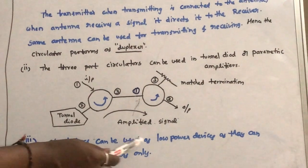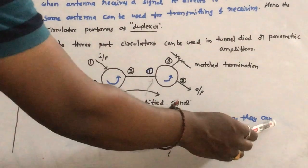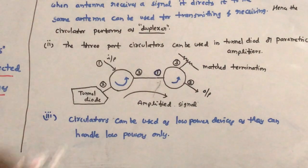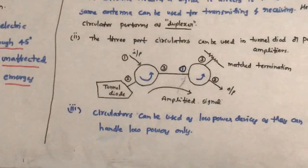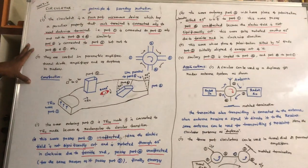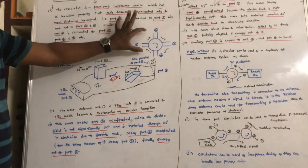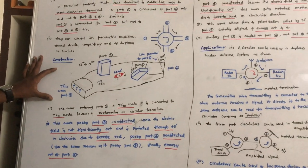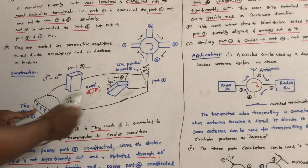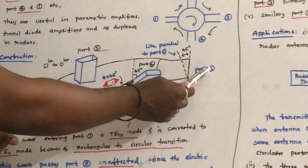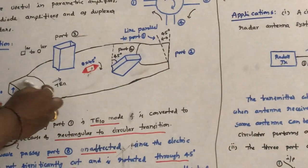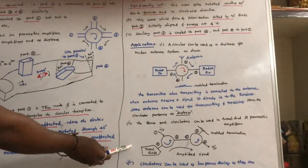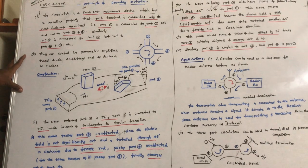Circulators can be used as low-power devices as they can handle low powers only. This concludes the discussion on the circulator — a very important topic for examinations — covering its operation, construction, how signals travel from port 1 to port 2 and from port 2 to port 3, and its applications in microwave circuits. Thank you.